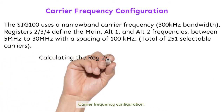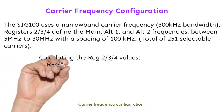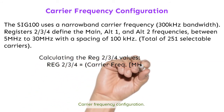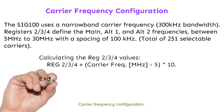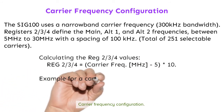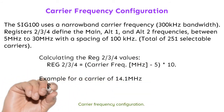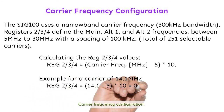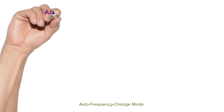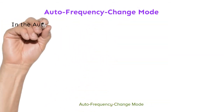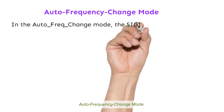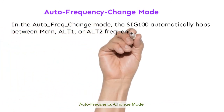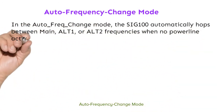Calculating the REG2, REG3, and REG4 values: register equals carrier frequency in MHz, minus 5, multiplied by 10. For example, for a carrier of 14.1 MHz, the register value equals (14.1 − 5) × 10 = 91. In the auto frequency change mode, the SIG100 automatically hops between main, ALT1, or ALT2 frequencies when no powerline activity is detected for more than 2 seconds.